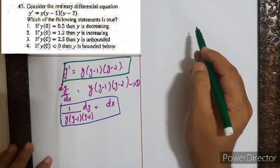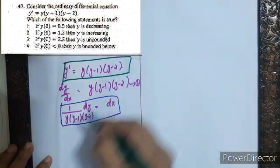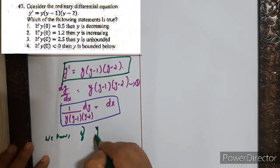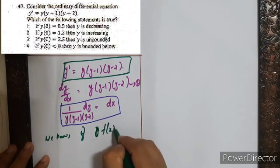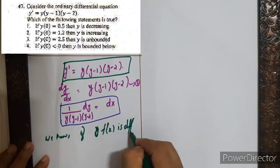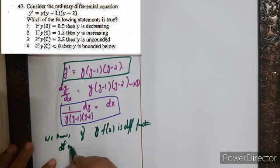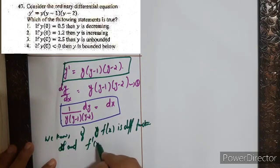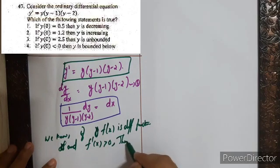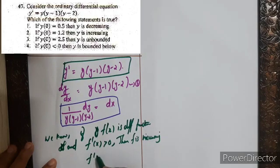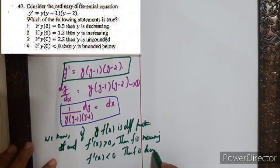We know that if f(x) is a differentiable function and f'(x) > 0, then f is increasing. And if f'(x) < 0, then f is decreasing. So looking at our equation y' = y(y-1)(y-2), we will use the sign of y' to determine behavior.